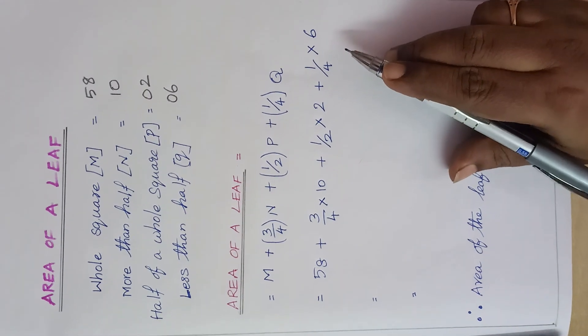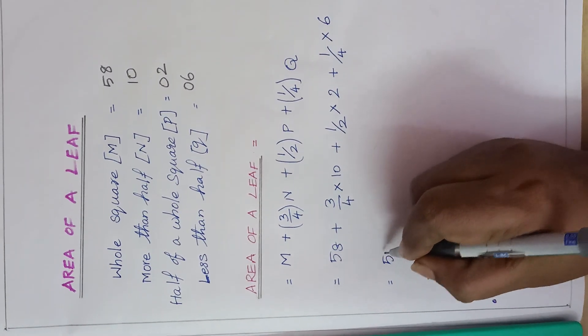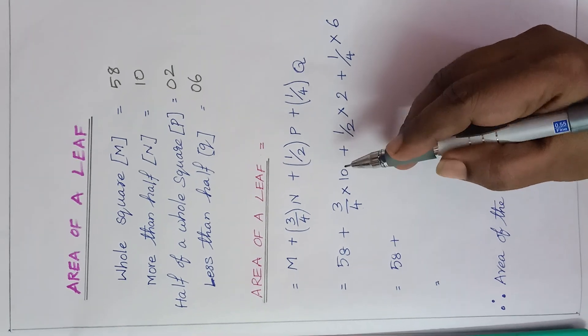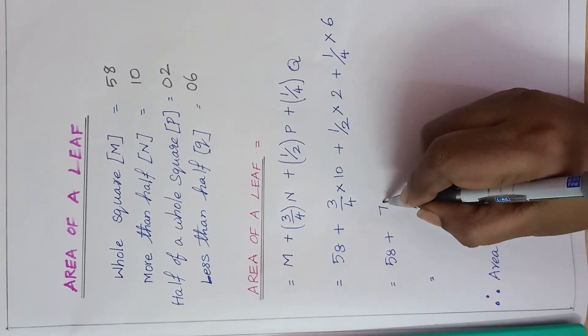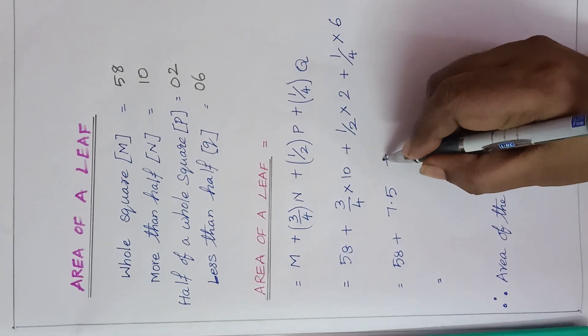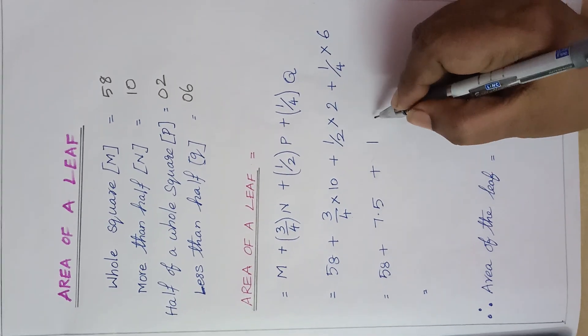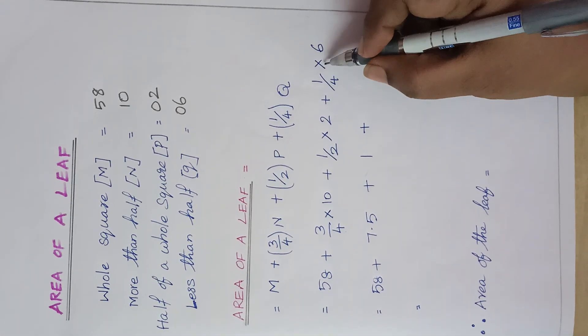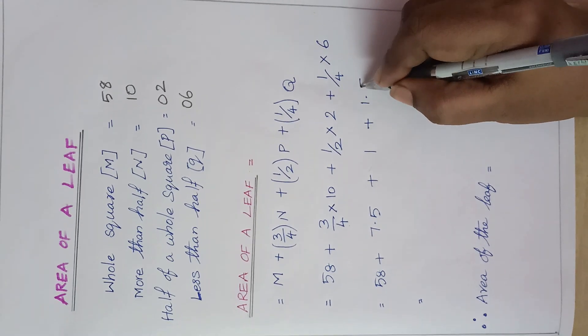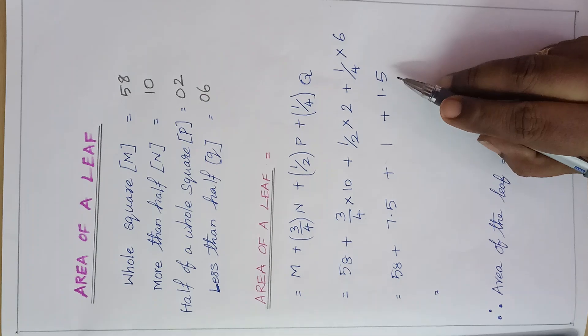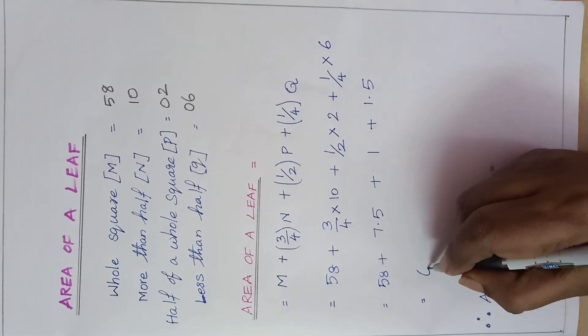Okay. So now we will substitute the values. 58 plus 3 by 4 into 10, the value is 7.5, plus half into 2 is equal to 1, plus 1 by 4 into 6 is equal to 1.5. Now, count all these 4 numbers. Because we will get 68.